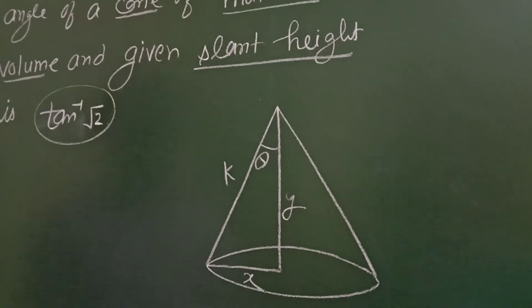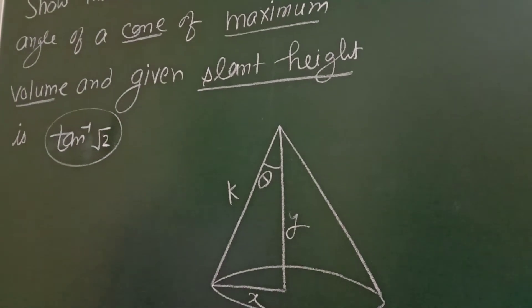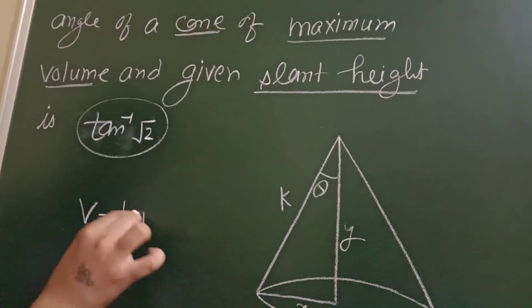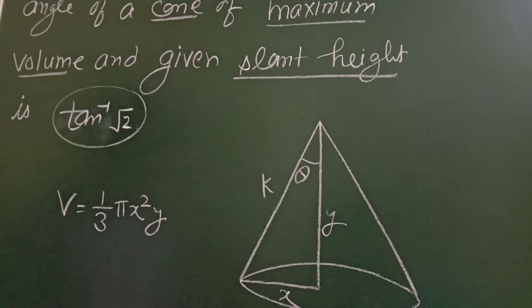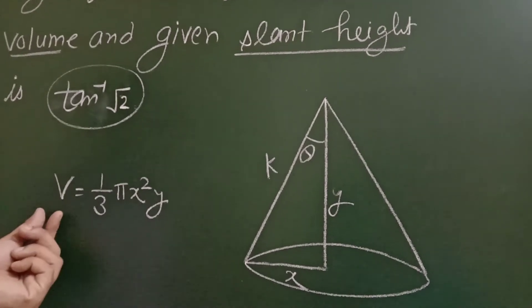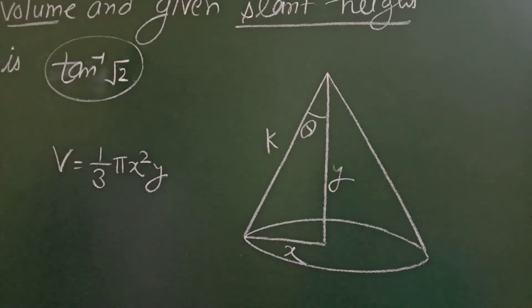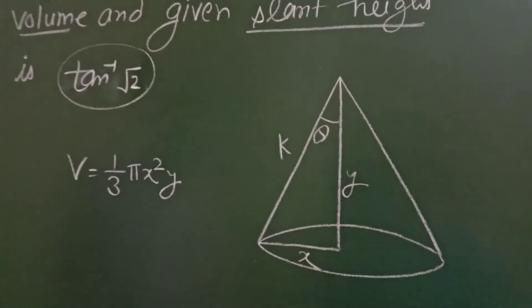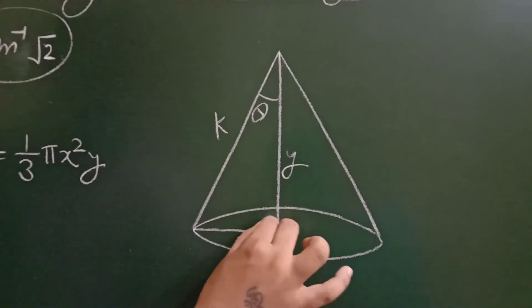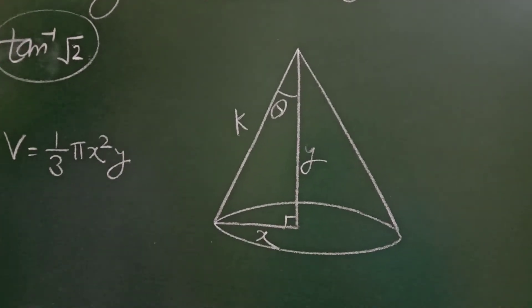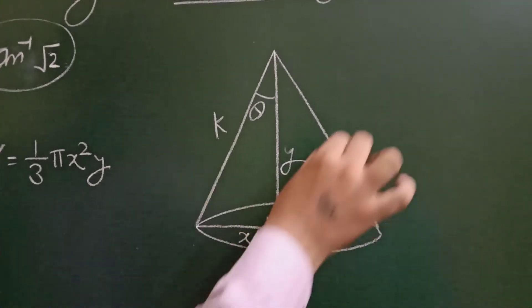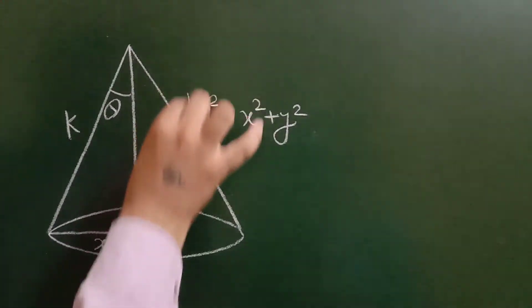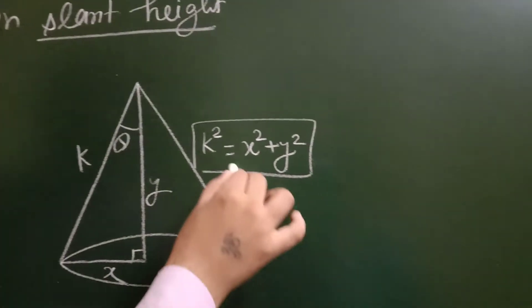So we will see which quantity we will maximize. You know volume is V = (1/3)πr²h. If you want to maximize, then you will use a single variable. Here there are two variables. So you need to replace the variable. If you look at the right angle triangle and apply Pythagoras theorem, then you will have x² + y² = k², which is equation number 1.